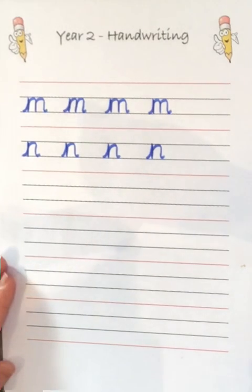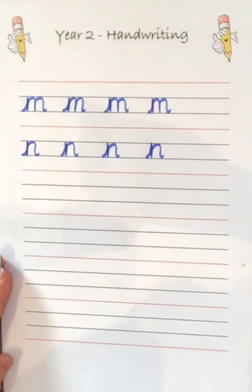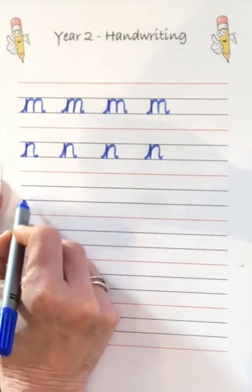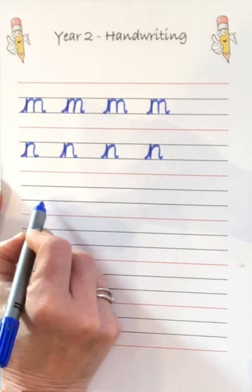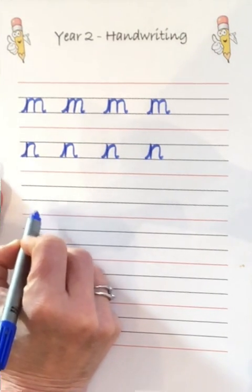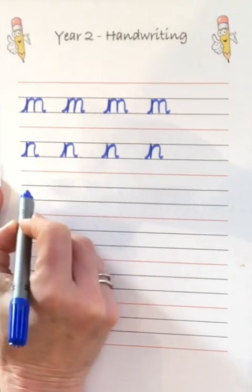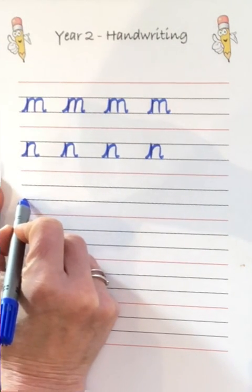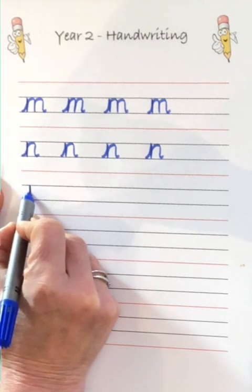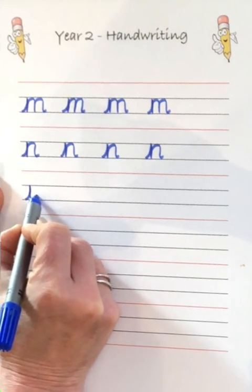The letter Y, that is a descender. It goes down under the line. So you must make sure that the body of your Y is sitting on the bottom grey line and the tail, the bit that goes under the line goes under, down to the red line. So you start on the line and you go up, back down on the same line and you scoop round and back up.